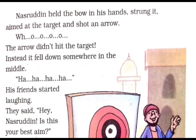Instead, the arrow fell down somewhere in the middle — vah kaheen beech mein neeche gir gayi. His friends started laughing — unke doston ne hasna shuru kar diya. They said, 'Hey Nasruddin, is this your best aim?'